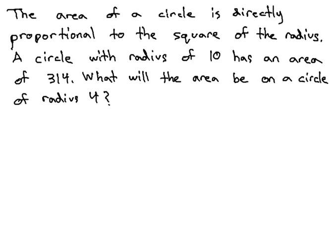We are asked to do something with the variables as we consider that proportionality. In this problem, we are told that the area of a circle is directly proportional to the square of the radius. For example, a circle with a radius of 10 has an area of 314. We want to know what will the area be on a circle of radius 4.